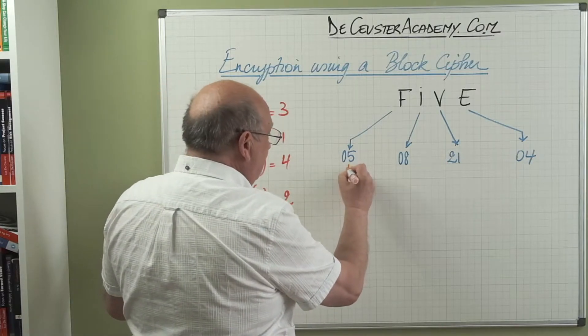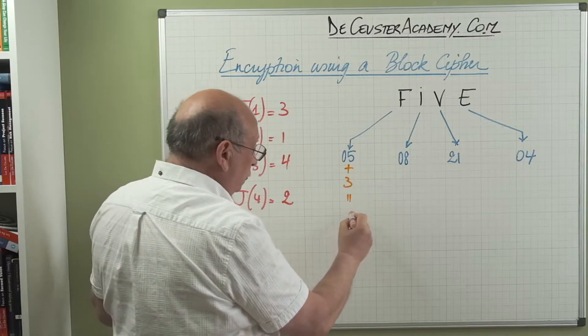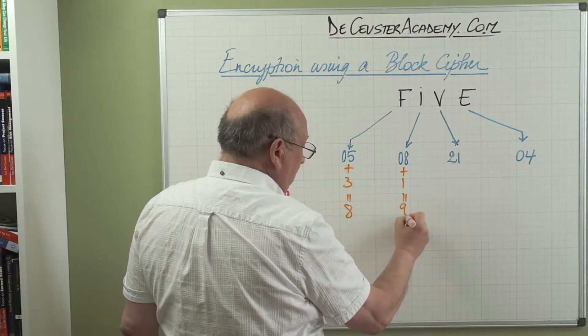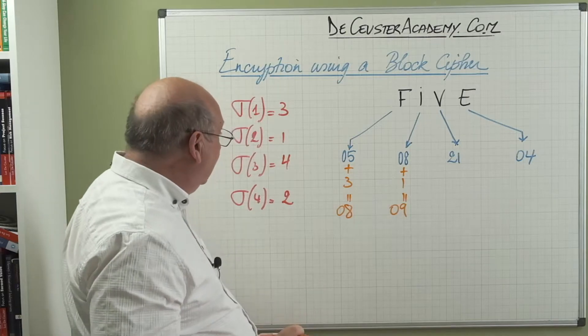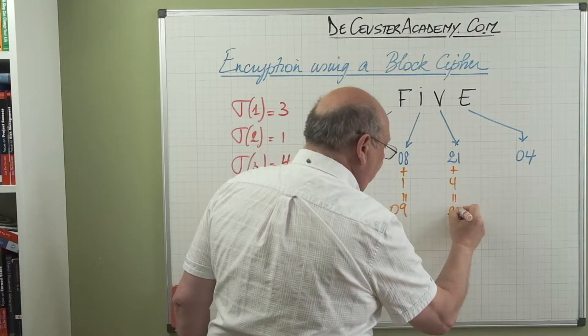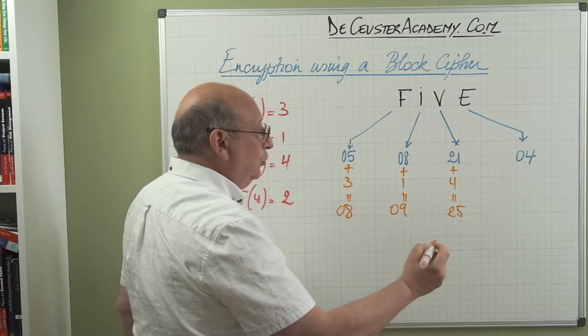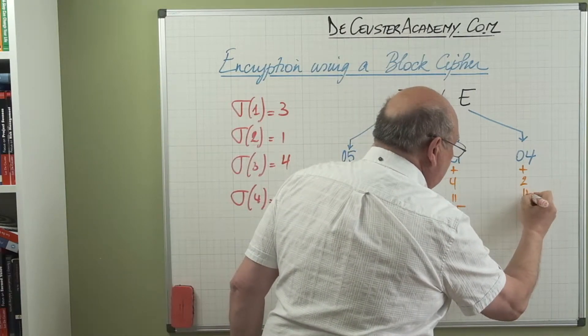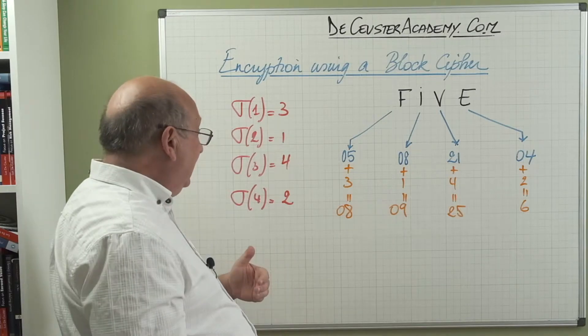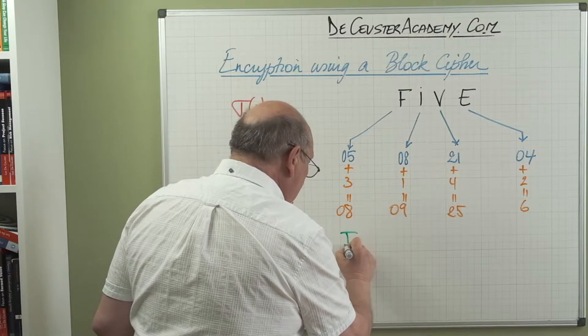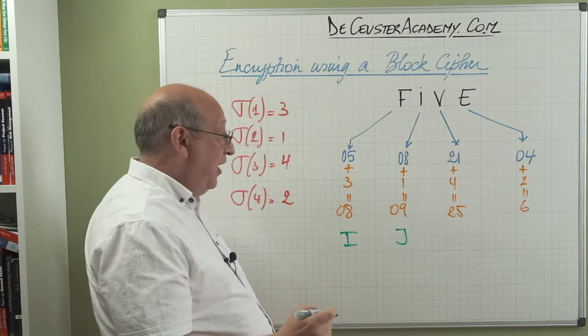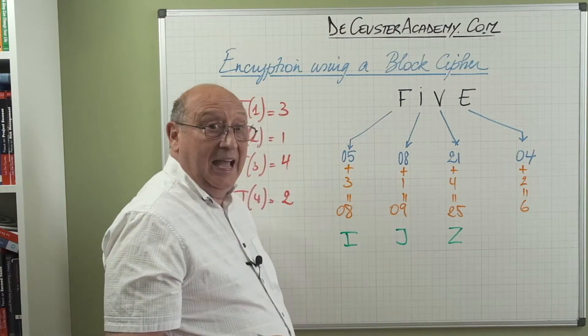All in capital letters, and we are going to add to the first one plus three modulus 26. Well, it's eight modulus 26, that's still eight. We have eight plus one, so this gives us nine or zero nine. We write it like this. The third letter, we have four, so we add four plus four is 25. And the last one, we add two plus two is six, all modulus 26, so it doesn't change anymore. So basically what we get here, we get a new message.